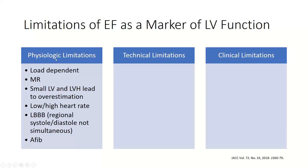LVEF is load dependent. The end systolic volume is dependent on afterload as well as contractility. The end diastolic volume is dependent on contractility and preload. Concomitant pathologies like MR can unload the LVEF and therefore change our EF. If the LV is small or there's significant LVH, it can lead to overestimation. At the extremes of either high or low heart rate, we have trouble delineating exactly when end systole and diastole occurs. With left bundle branch block, regional systole and diastole will not be simultaneous. Atrial fibrillation will lead to beat-to-beat variation that we don't account for in the one tracing we usually do for Simpson's biplane.